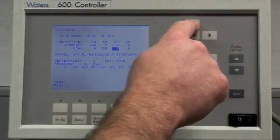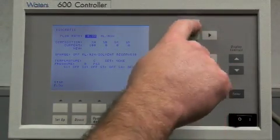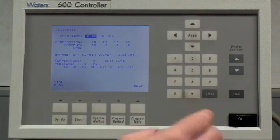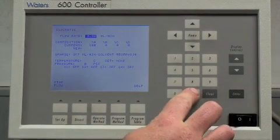Now, we get the pump operating by going up, back up to the flow rate, and entering in a value, say for example, 0.5 mils a minute.